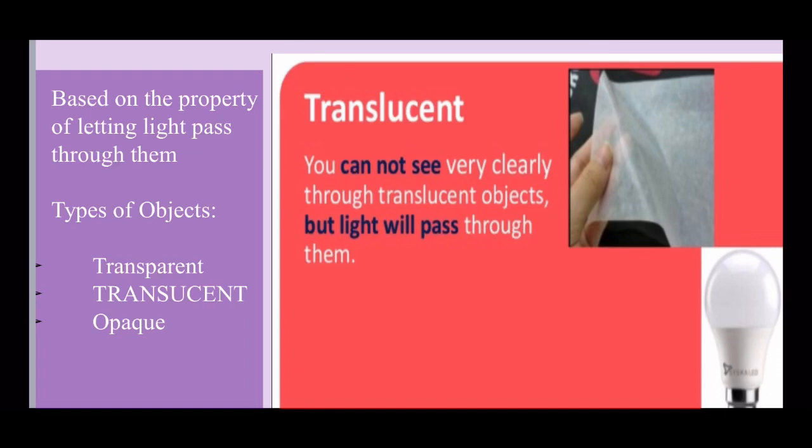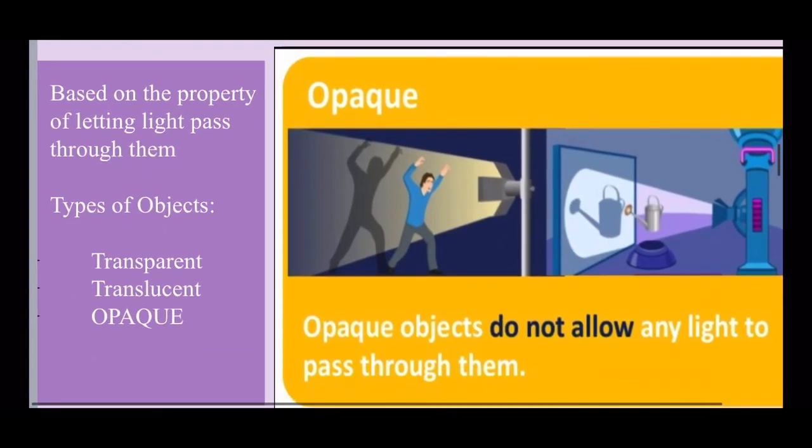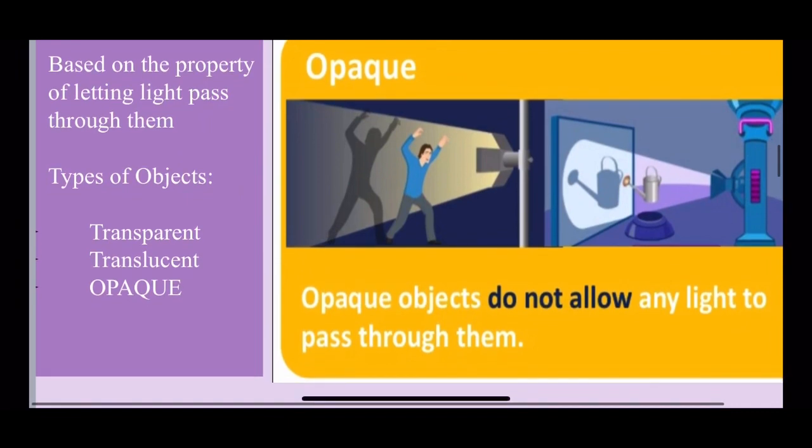The last category is opaque objects. These do not allow light to pass through them. There are many examples of opaque objects around us. Doors, walls, humans, plants, all are opaque objects.